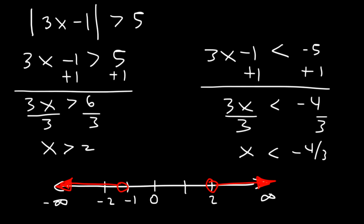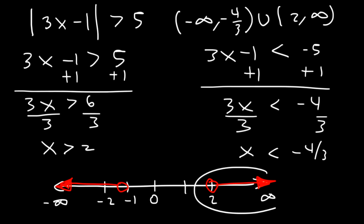Now the solution using interval notation, let's write it up here, it's gonna be negative infinity to negative 4 over 3 and then union 2 to infinity. So here's the 2 to infinity part and here's the negative infinity to negative 4 thirds. The open circle is at negative 4 thirds. Just keep that in mind.